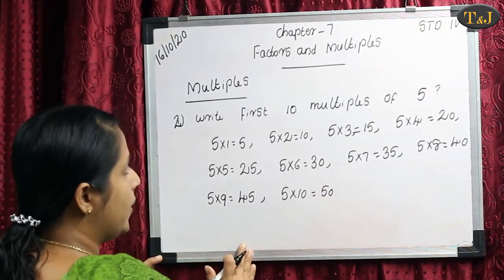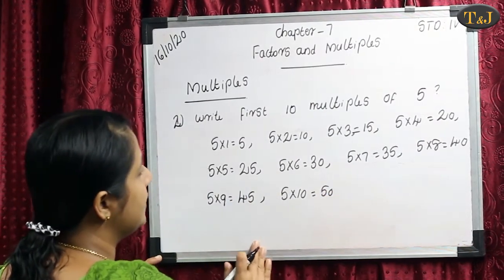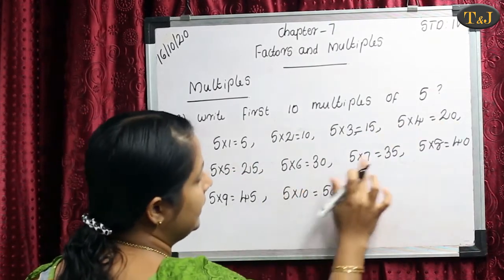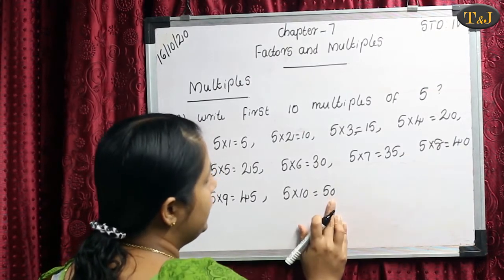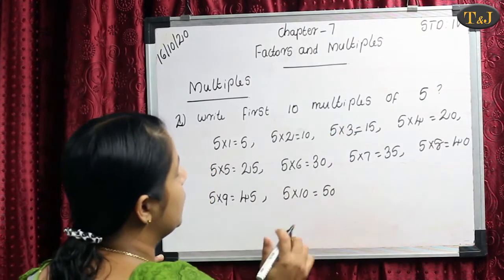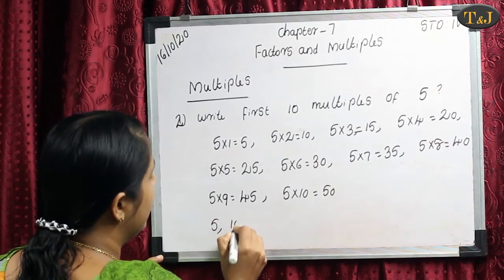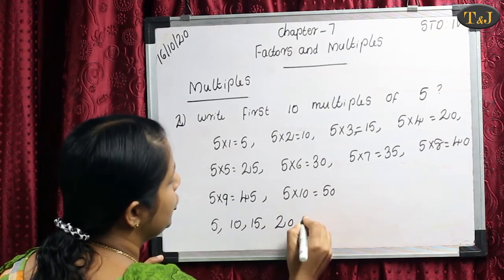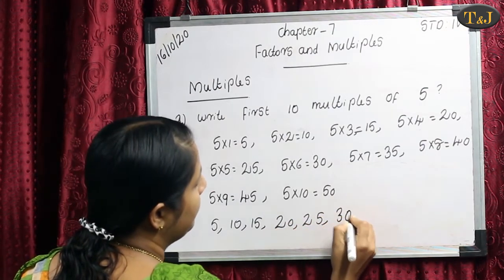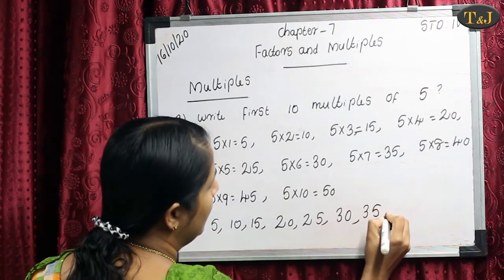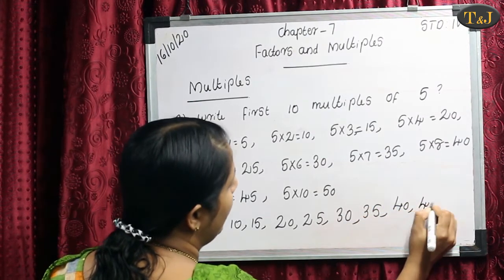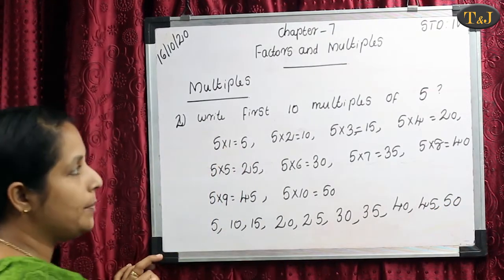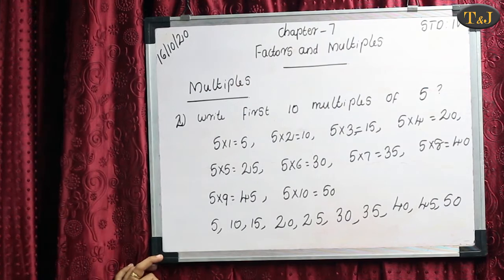Here our result is known as the multiples of 5. The result of multiplying 5 is: 5, 10, 15, 20, 25, 30, 35, 40, 45, and 50. These are the 10 multiples of the number 5.